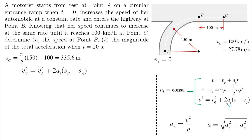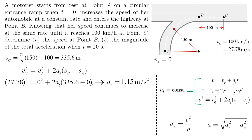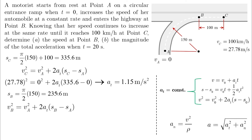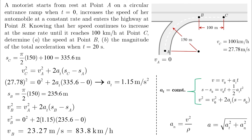Using the third kinematic equation between A and C: V_C is given, V_A equals zero, and the total distance is 335.6 meters. This gives a tangential acceleration of 1.15 meters per second squared. Now with A_t known, we apply the third equation again between A and B, where the distance from A to B is pi/2 times 150, equal to 235.6 meters. Solving gives V_B equals 23.27 meters per second, or 83.8 kilometers per hour.